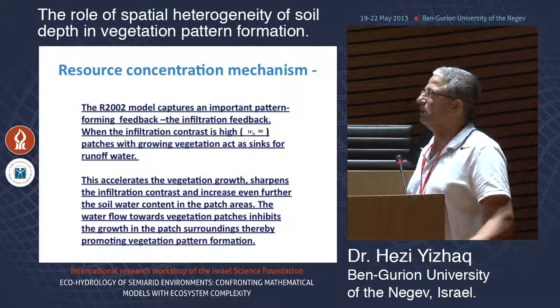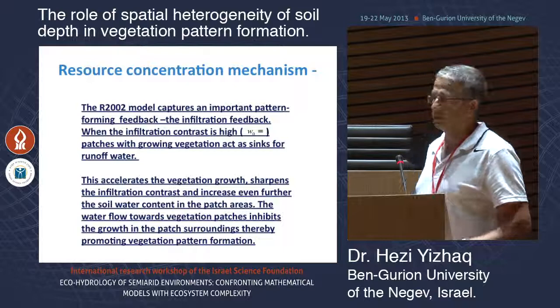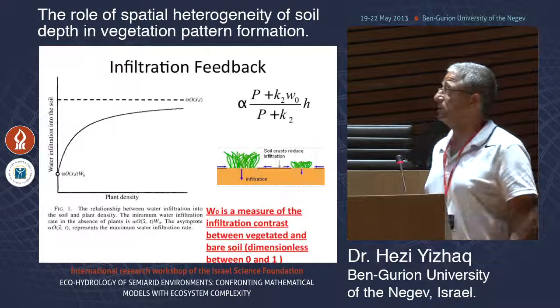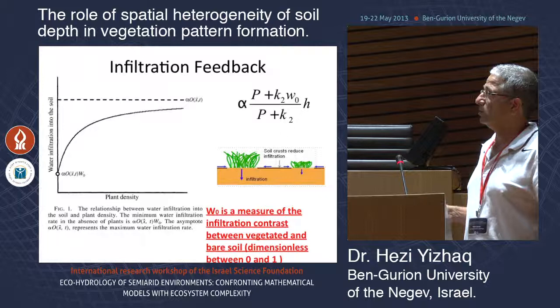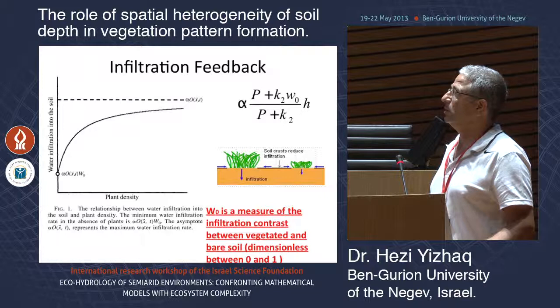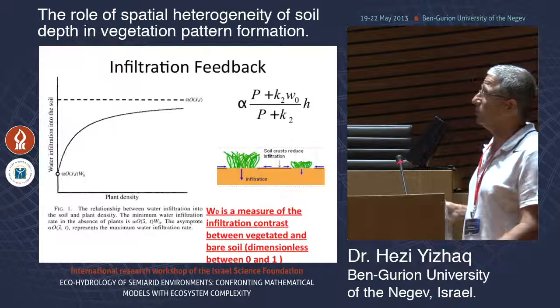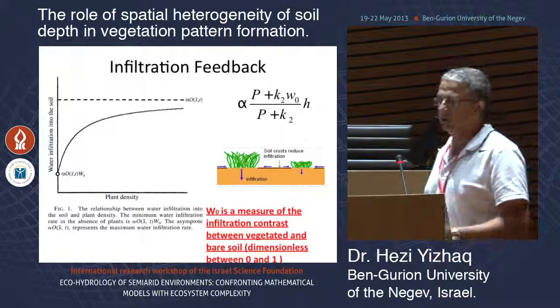The infiltration feedback, as Ehud discussed, accelerates vegetation growth and sharpens the infiltration contrast between vegetation and bare soil. It is modeled by a term where plant density and water infiltration into bare soil are represented. The term saturates as plant density increases. W0 is a measure of the infiltration contrast between vegetated and bare soil — it is a parameter between 0 and 1.